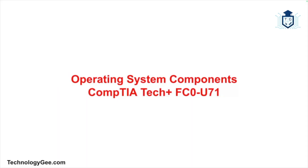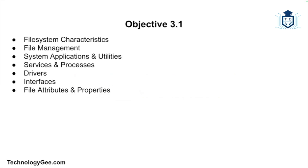What's up everybody, this is Tech G back with another video to help you successfully pass the CompTIA Tech Plus certification exam. In this video we're going to explore key components of an operating system. Understanding these elements is critical for anyone studying for the CompTIA Tech Plus exam. By the end of this video you'll have a solid understanding of the file systems, file management, system applications, utilities, services, processes, drivers, interfaces, and file attributes.